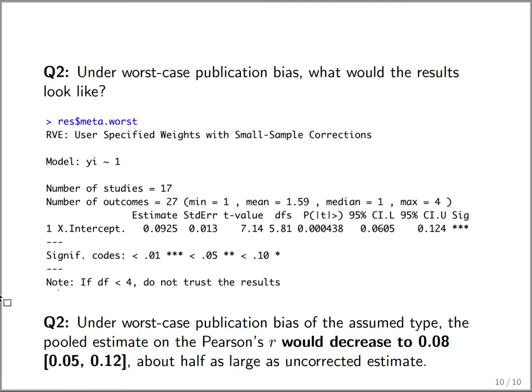The other question is: what about worst-case publication bias — what would it look like if publication bias were favoring affirmative results to an almost infinite degree? The same call to S-value returns a worst-case meta-analysis, meta.worst. Transforming back to Pearson's R from Fisher's Z-scale, under worst-case publication bias the pooled estimate would decrease to a correlation of 0.08 with a confidence interval bounded above 0.05 — about half as large as the uncorrected estimate, but still positive even under this very severe publication bias.